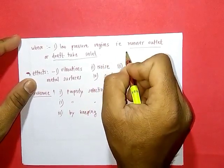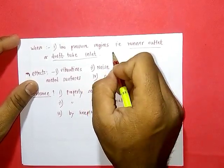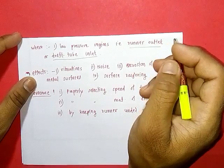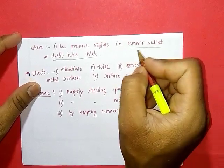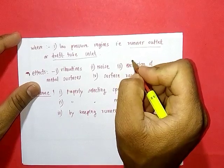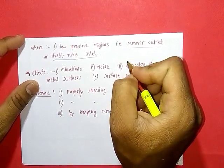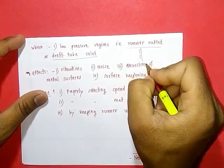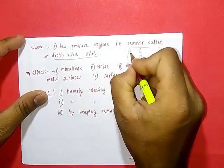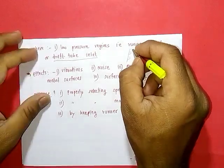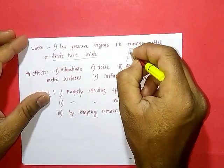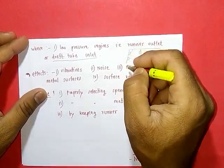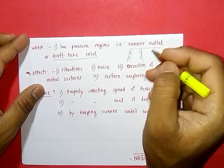As the bubbles flow to high pressure regions, the pressure inside the bubble is low while the surrounding pressure is high. Due to this pressure difference, the bubbles collapse. When these bubbles collapse near the walls of the draft tube, the hammering effect of surrounding water on these empty or vapor-filled regions causes the surface of the draft tube to get eroded and roughened.